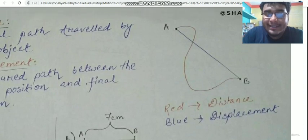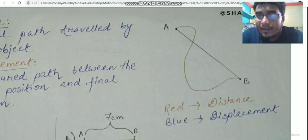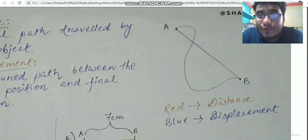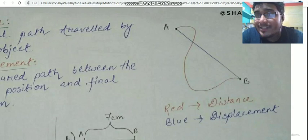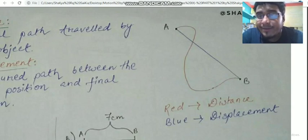The actual path travelled indicates distance, while the straight-line separation between start and end points indicates displacement.